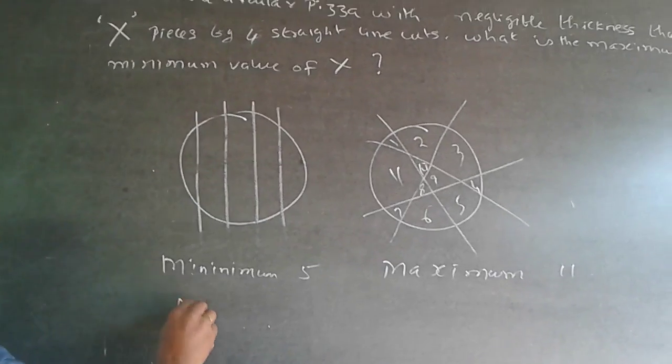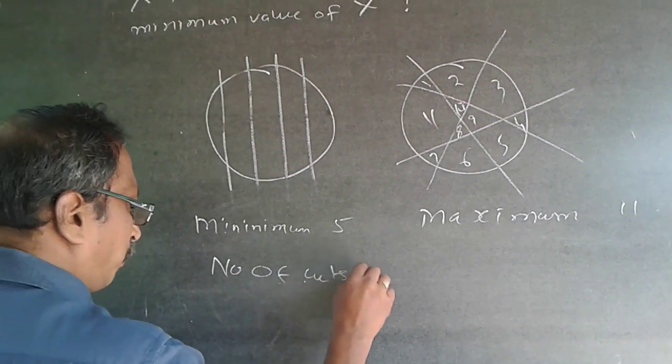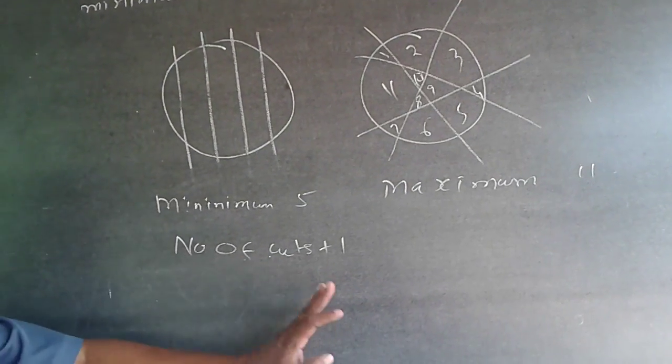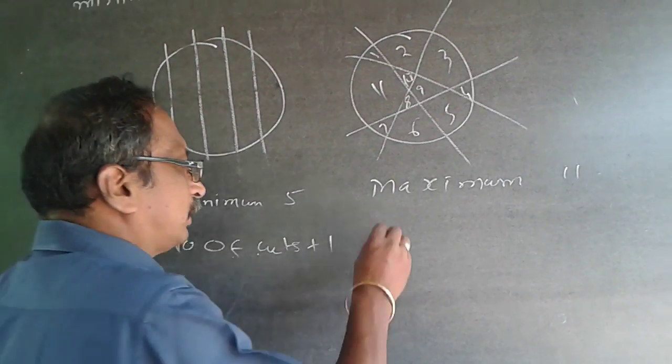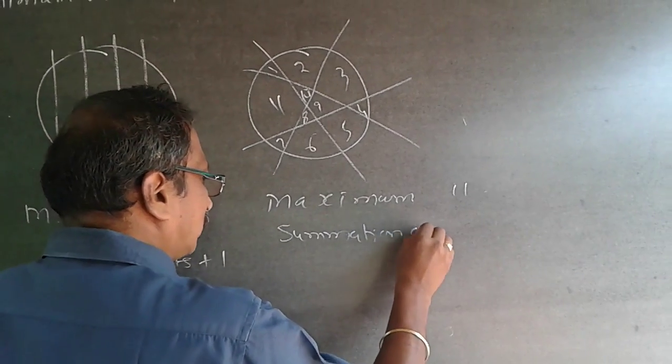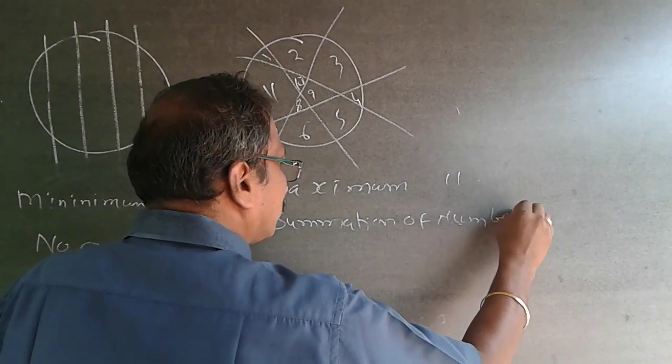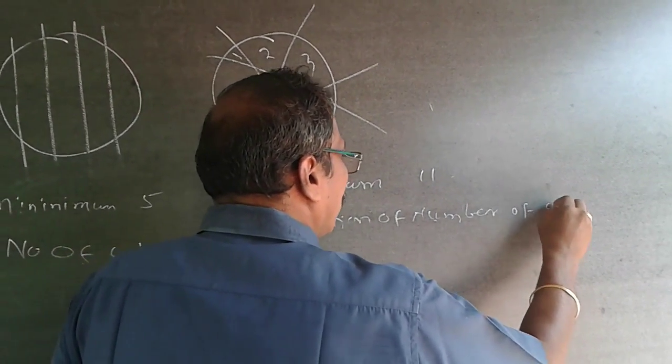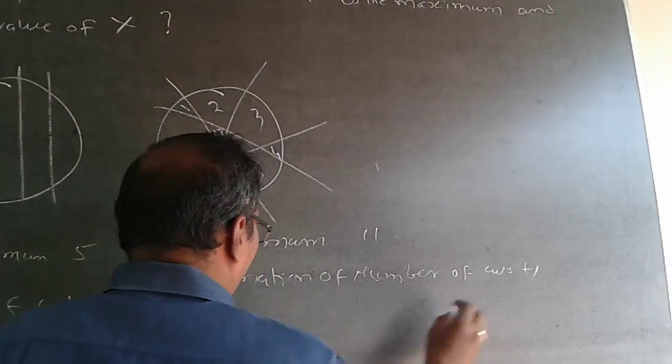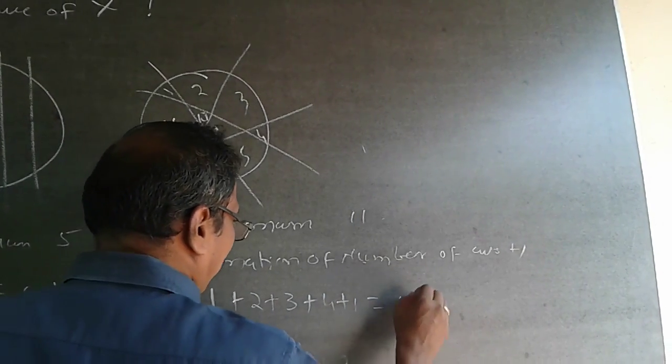Minimum number of pieces will be number of cuts plus 1. That is 4 plus 1 will be 5. Maximum is summation of number of cuts plus 1. So here it will be 1 plus 2 plus 3 plus 4 plus 1 will be 11.